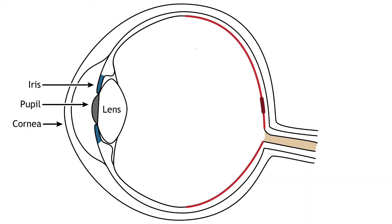The front of the eye consists of the cornea, pupil, iris, and lens. The cornea is the transparent external part of the eye. It covers the pupil and the iris and is the first location of light refraction.